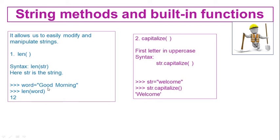How do we get 12? You can count: g-o-o-d is 4, then space is 5, then m-o-r-n-i-n-g brings it to 12. So the length of the word 'good morning' is 12, counting the space as well. It is a very simple function used to find the length of a string.